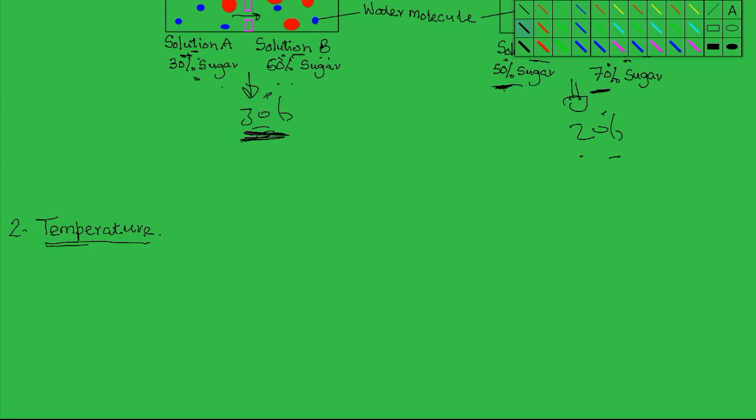But an increase in temperature will only have a positive effect up to a certain point. High temperature will denature and destroy the cell membrane to a point that the membrane will be incapable of carrying out osmosis. So as the temperature increases, the rate of osmosis will also increase, but beyond a certain point, high temperatures will denature and destroy the cell membrane, thereby bringing osmosis to a stop.